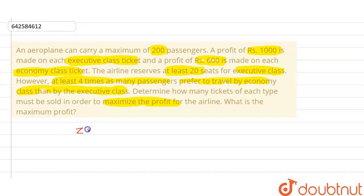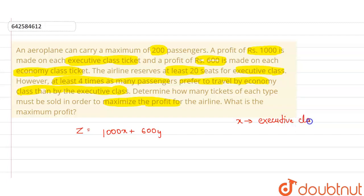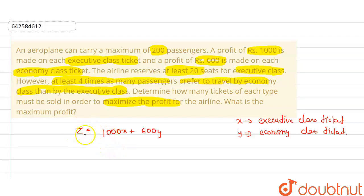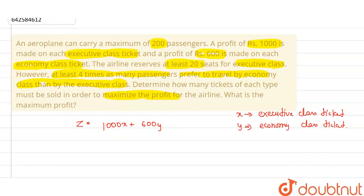We have to find the Z value, which should be maximum. Z equals 1000x plus 600y, where x is the number of executive class tickets and y is the number of economy class tickets. Z represents the profit, which is price multiplied by the number of units.